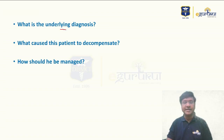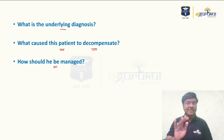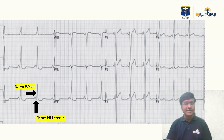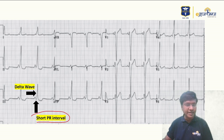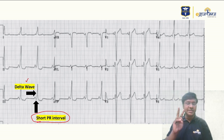There are three questions in this clinical scenario: first, what is the underlying diagnosis; second, what caused this patient to decompensate; and third, how should he be managed. Looking at the first ECG, the abnormalities are a short PR interval — less than 120 milliseconds — and slurring of the QRS complex, which is the presence of a delta wave.